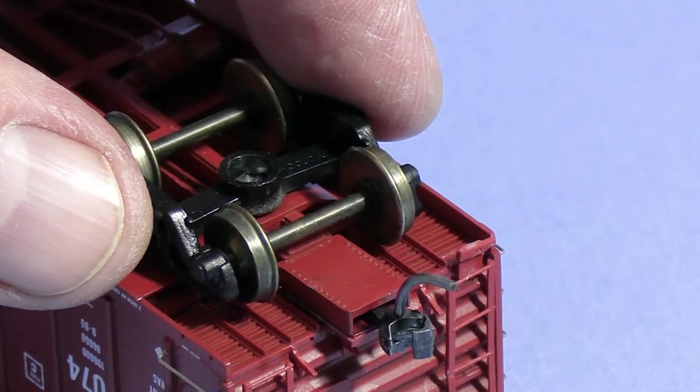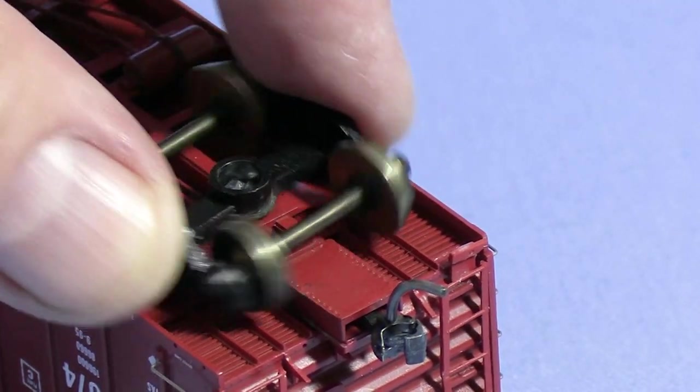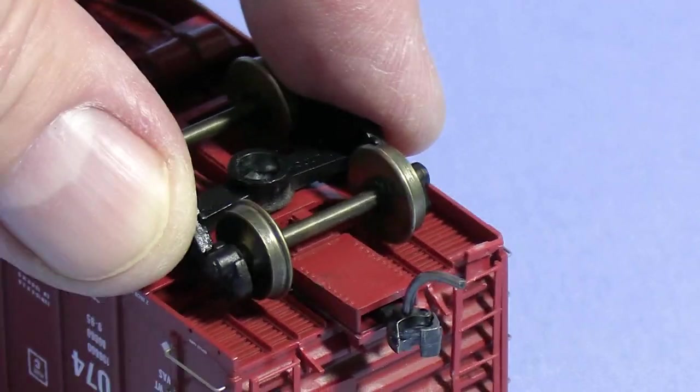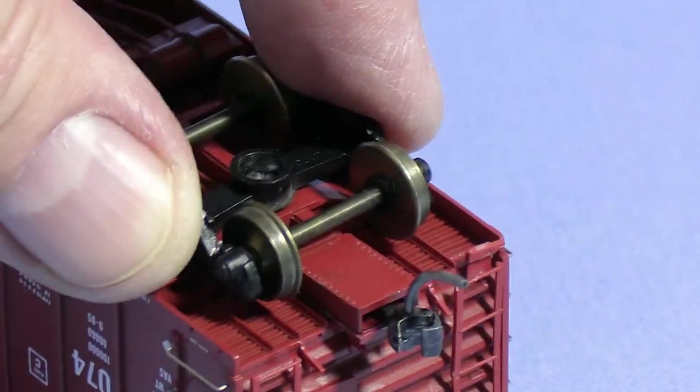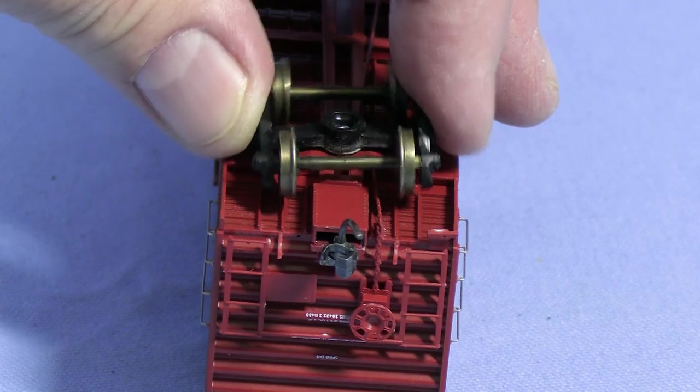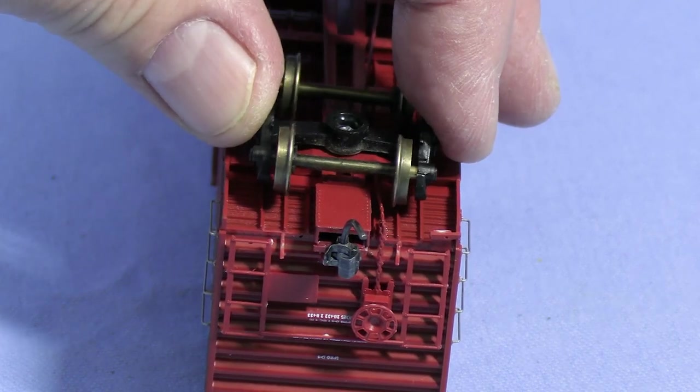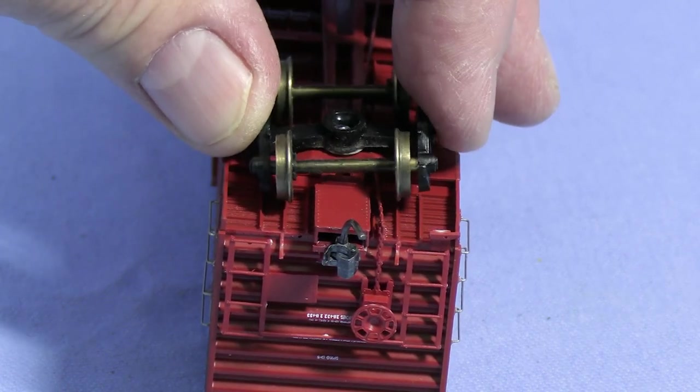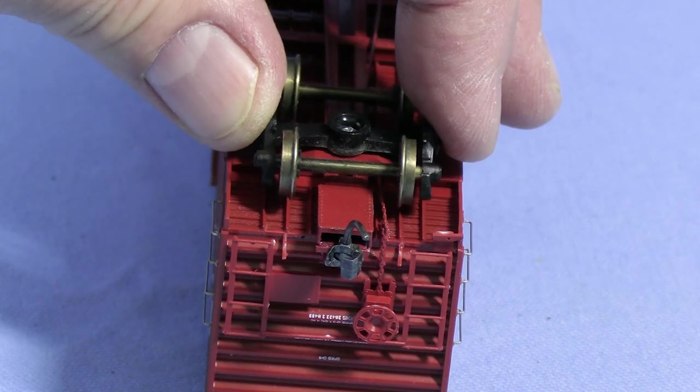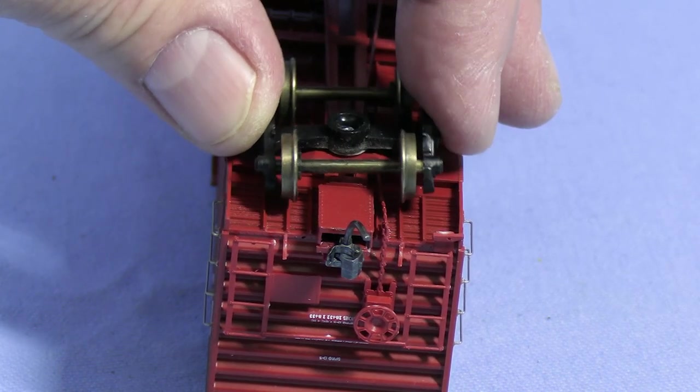In setting up a car, it's important to tighten one truck so that it will pivot but it won't rock side to side. As you can see, when I try to rock it, the whole car body's moving with me. The truck on the other end will rock. This creates a three-point suspension, and that will keep the car from wobbling and allow it to negotiate track that's slightly uneven.